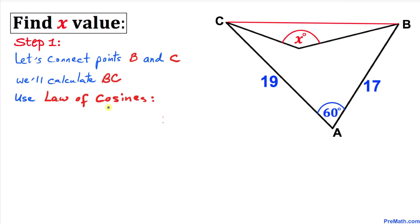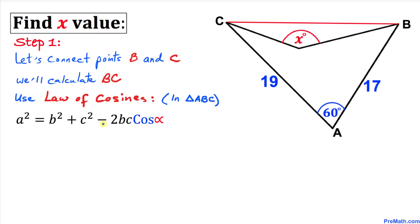To find BC, we are going to use the Law of Cosines: a² = b² + c² − 2bc·cos(α). I'm going to call the 60° angle alpha. The side opposite to it is side a, and the other two sides are b and c. This way we will calculate the value of a.